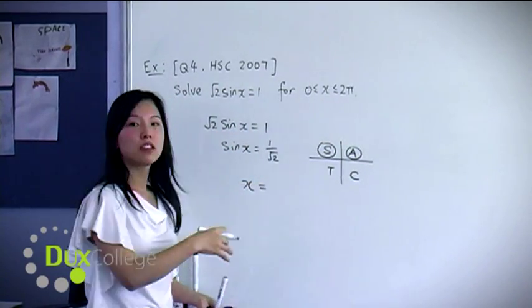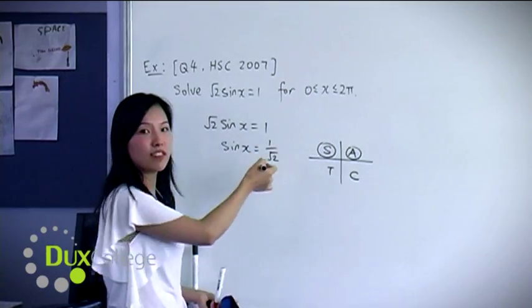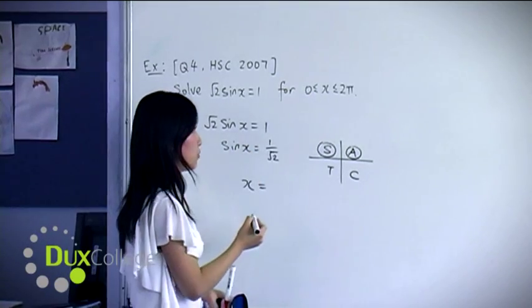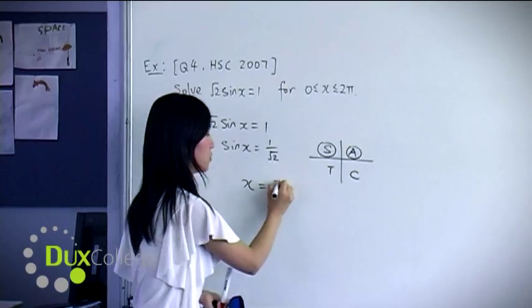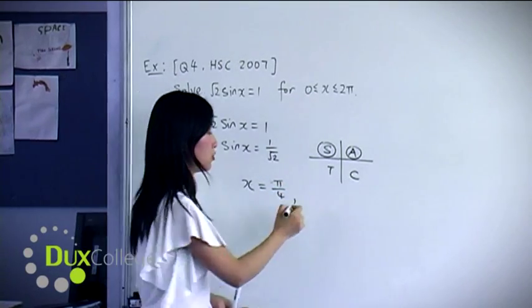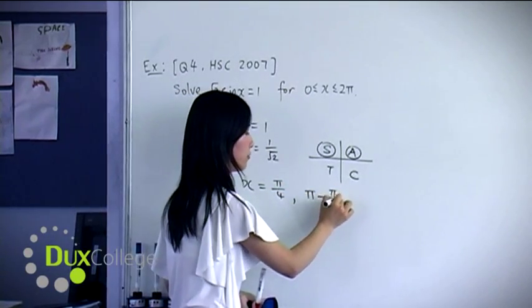So you can see that to solve this, you will take the inverse sine of 1 over root 2, which lies in the first quadrant, which is pi over 4. And for the second quadrant, you use pi minus pi over 4.